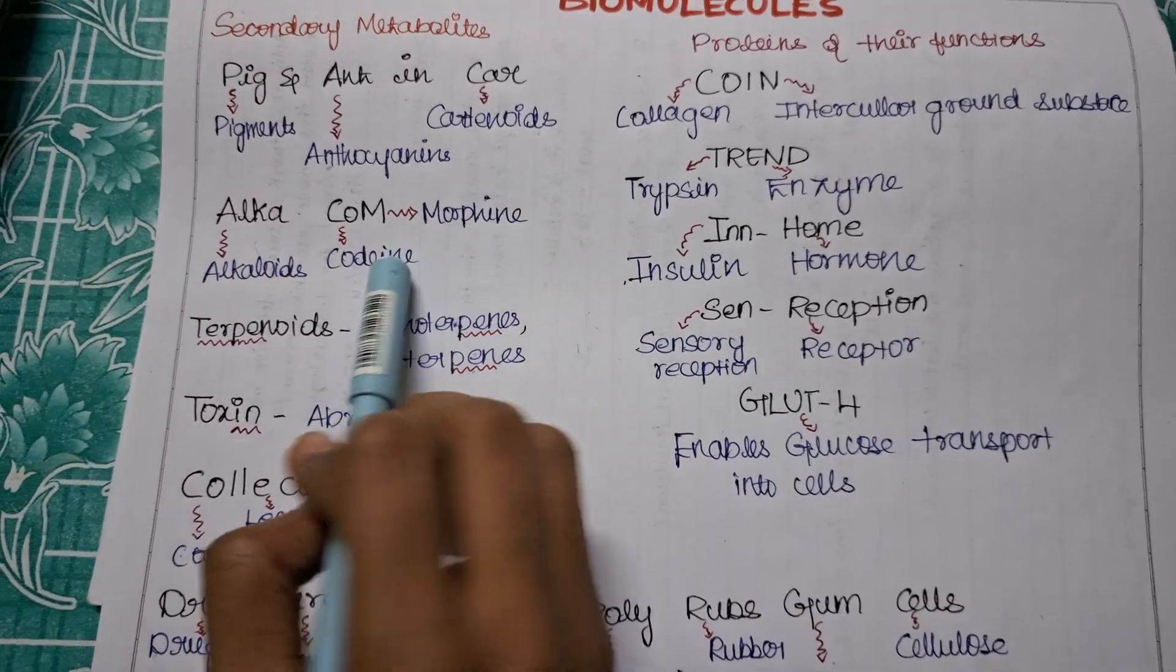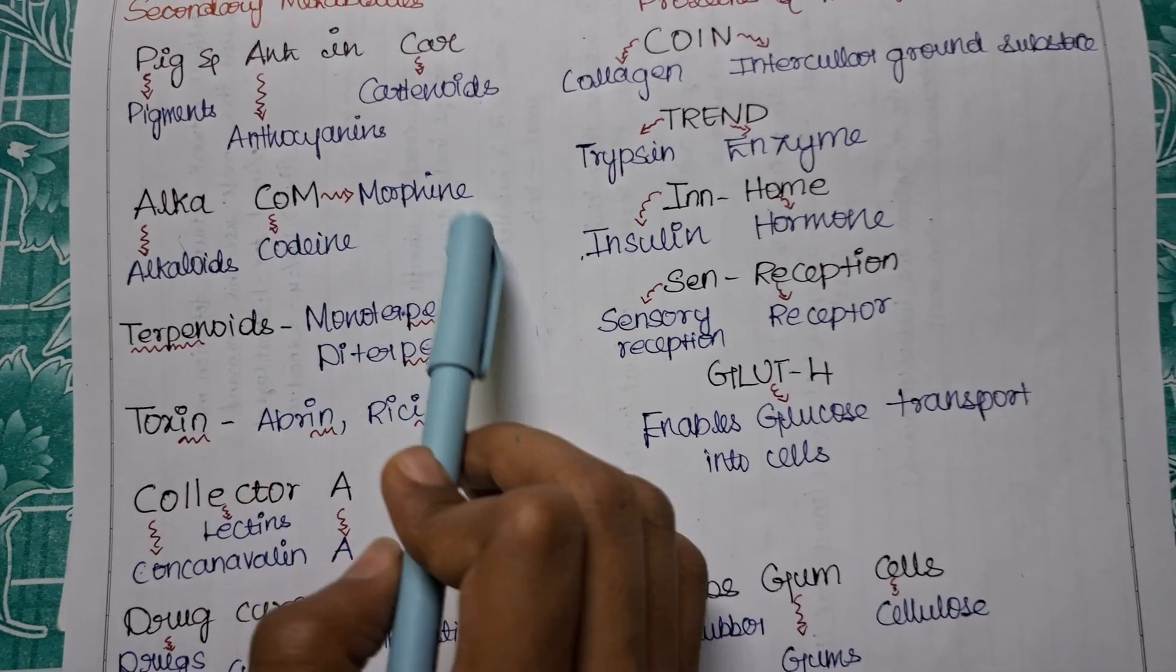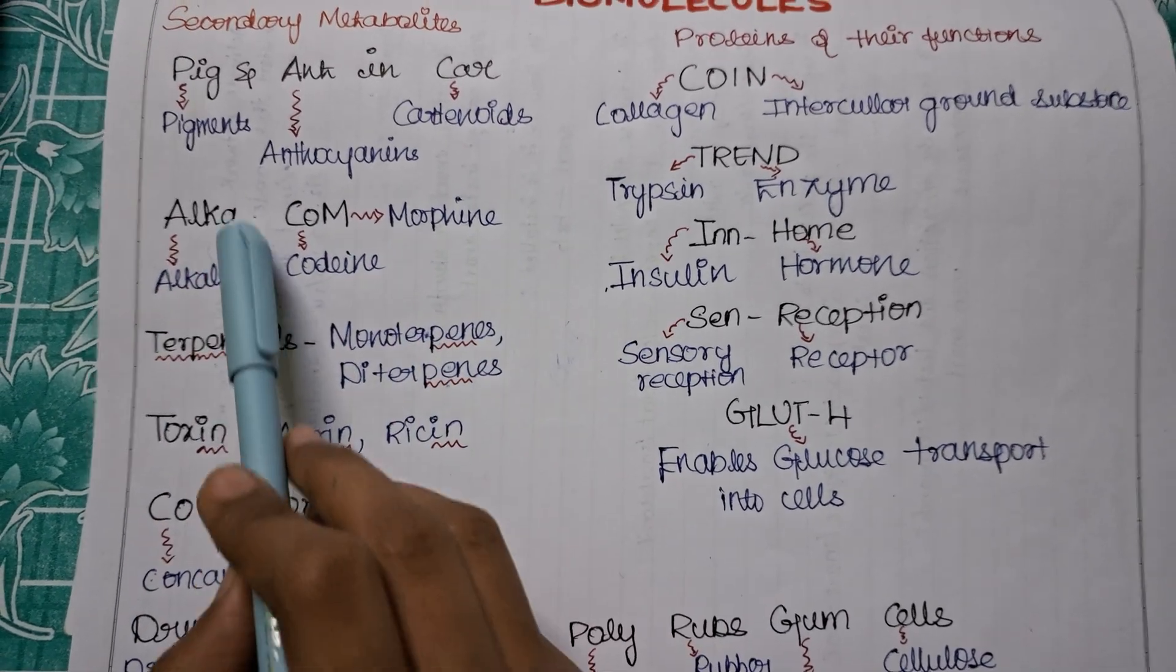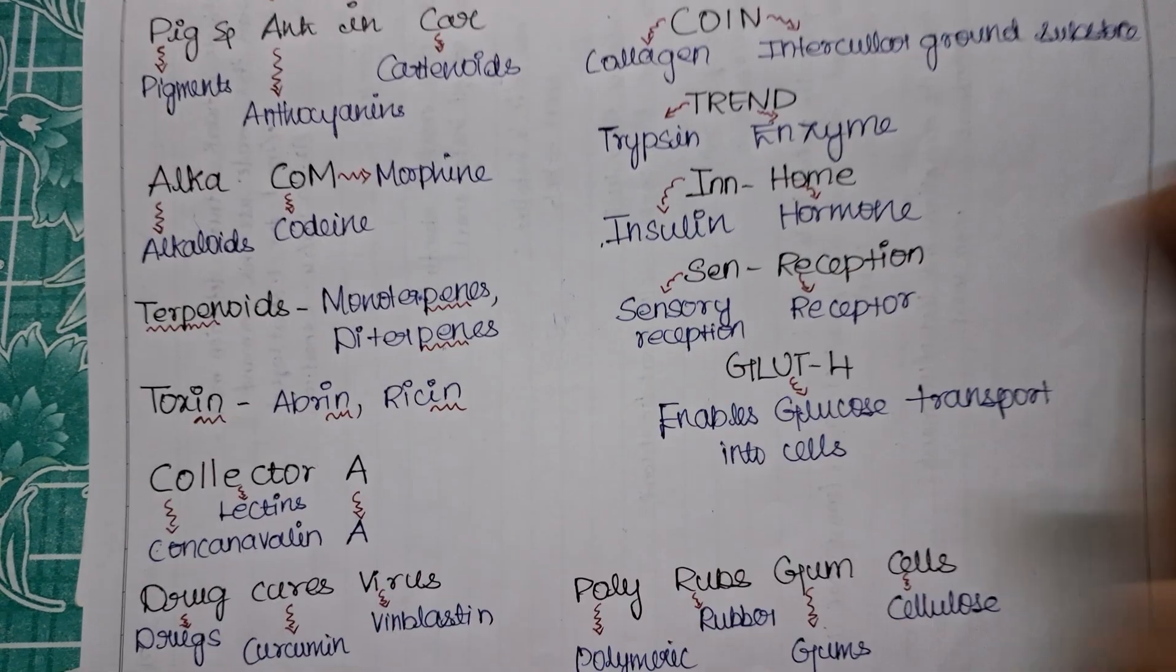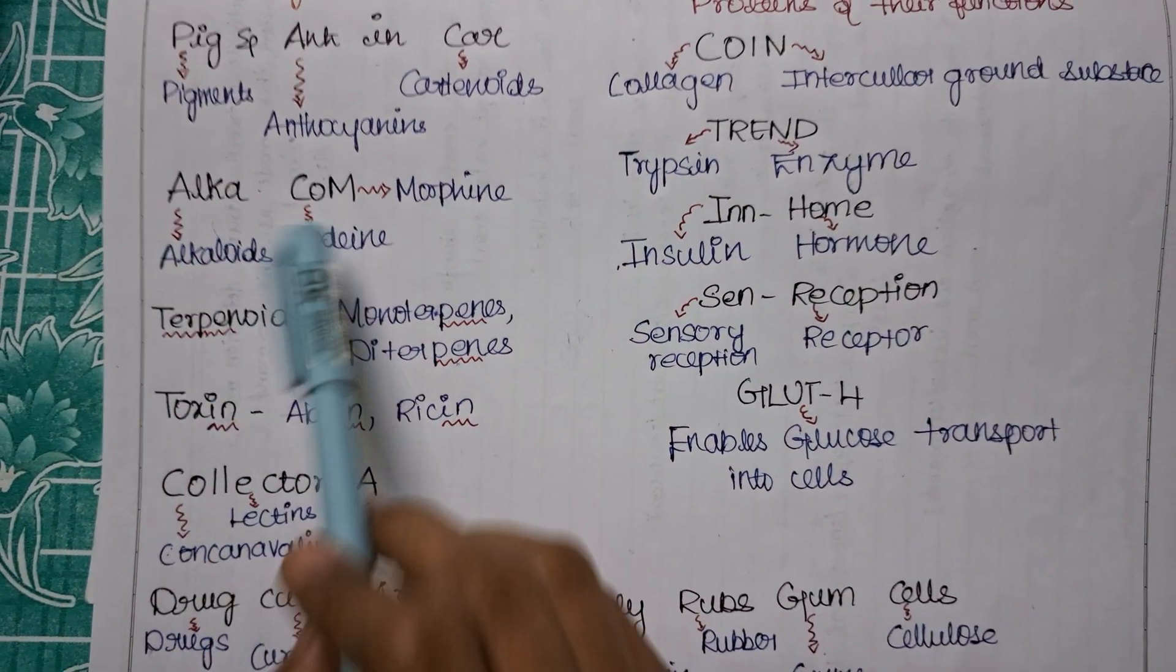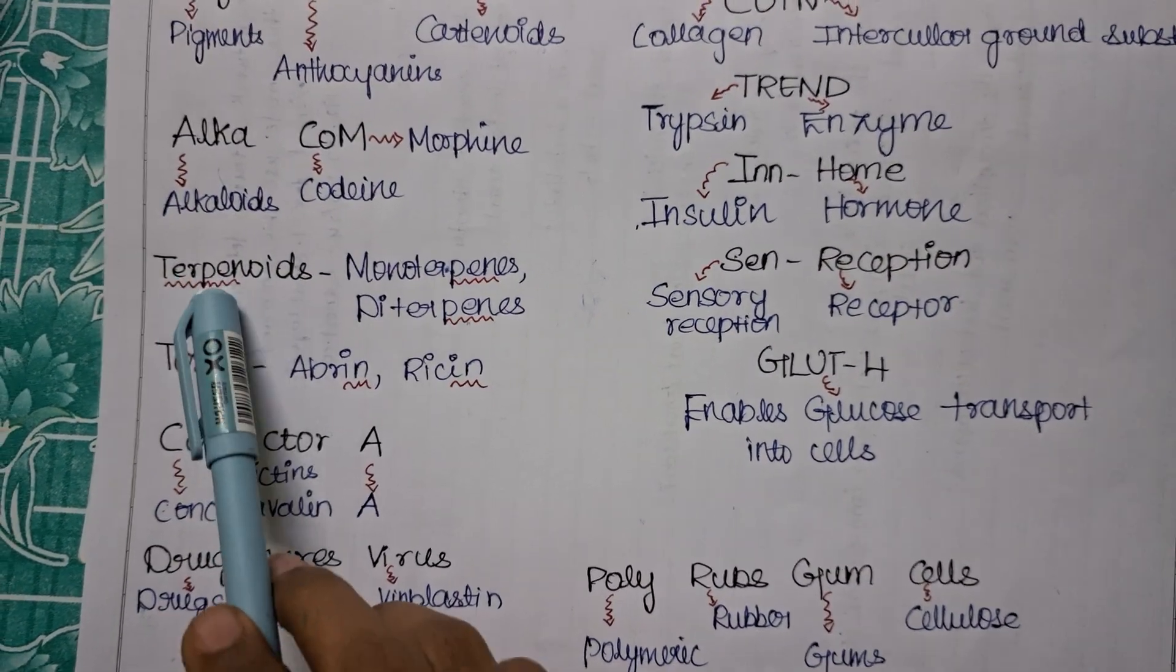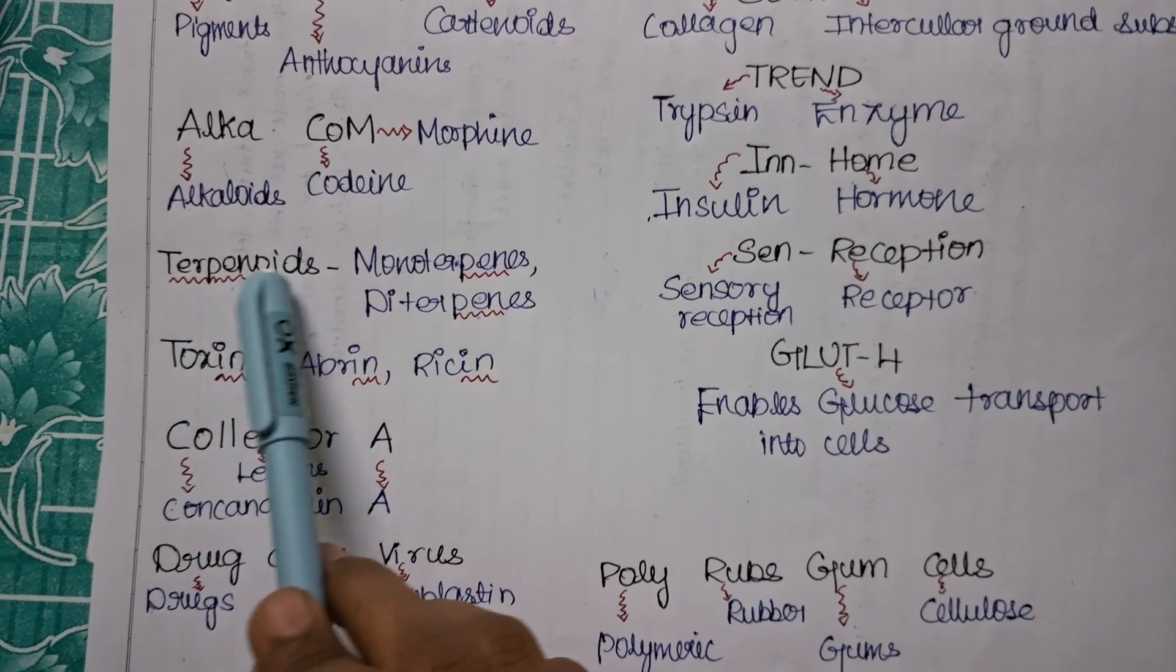Now we will move on to alkaloids. So ALKA.COM - you are visiting ALKA.COM. ALKA is for alkaloids, CO is for your codeine, M is for your morphine.